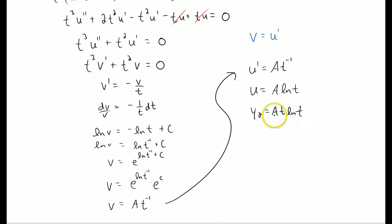And again, this constant here doesn't really matter, because when we plug this y2 into our general solution, we're just going to get another constant in front of this thing anyway. So we may as well just call y2 t natural log of t.